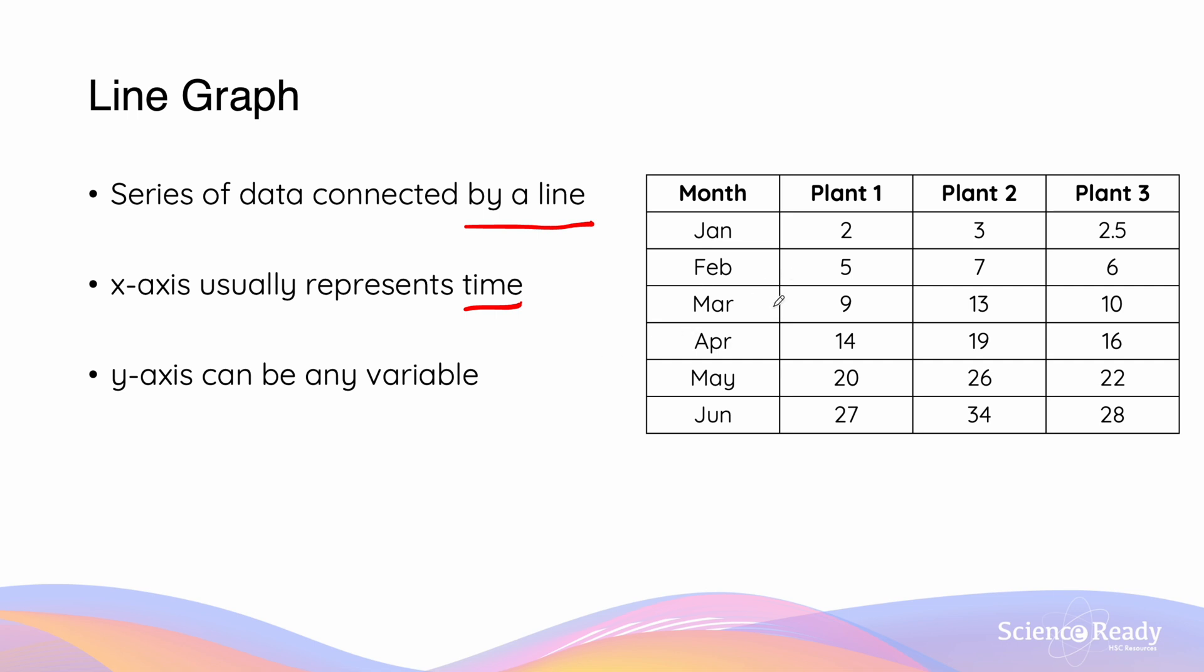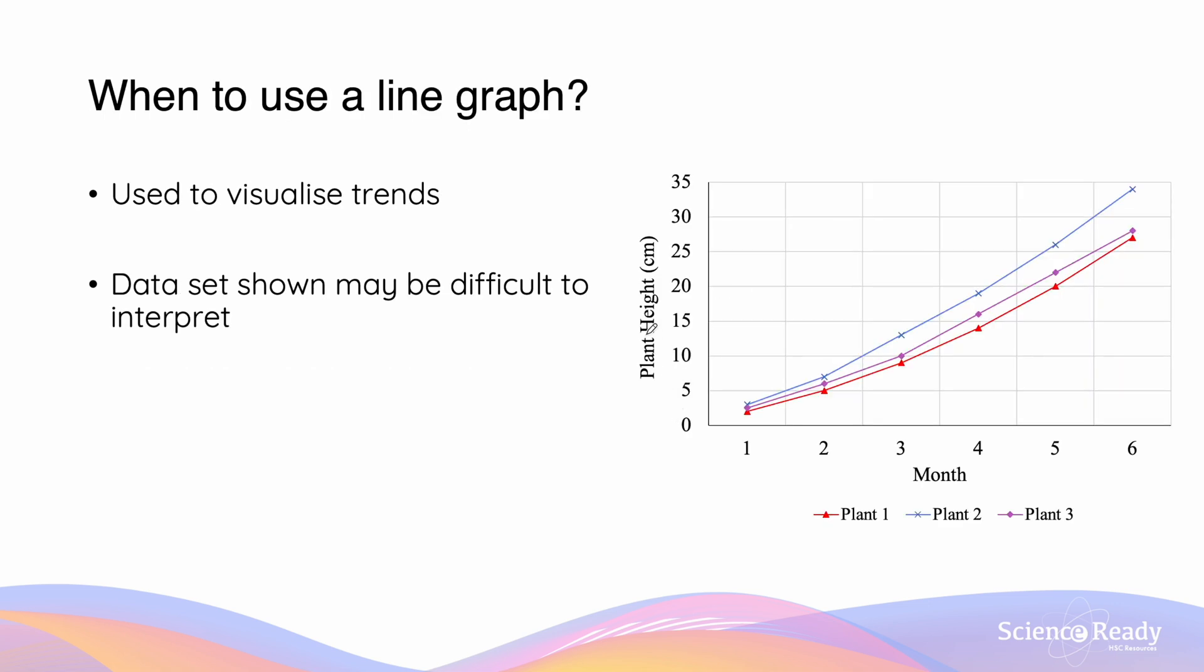In this case, the data which is given to us shows the growth of a plant over a period of six months from January, February, March, April, May, June. We use line graphs to help visualize trends since the given data is difficult to interpret, and the line graph helps us to show the trend of data over a period of time.